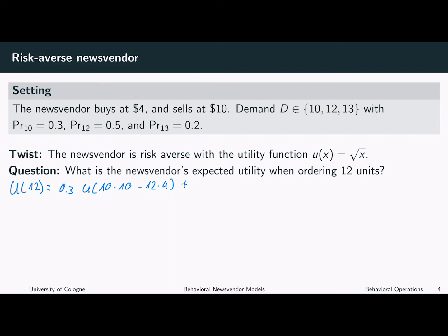With a probability of 70%, the demand will be larger or equal to 12. In this case, we will sell all 12 units, resulting in a revenue of 12 times 10, and again we have expenses of 12 times 4.